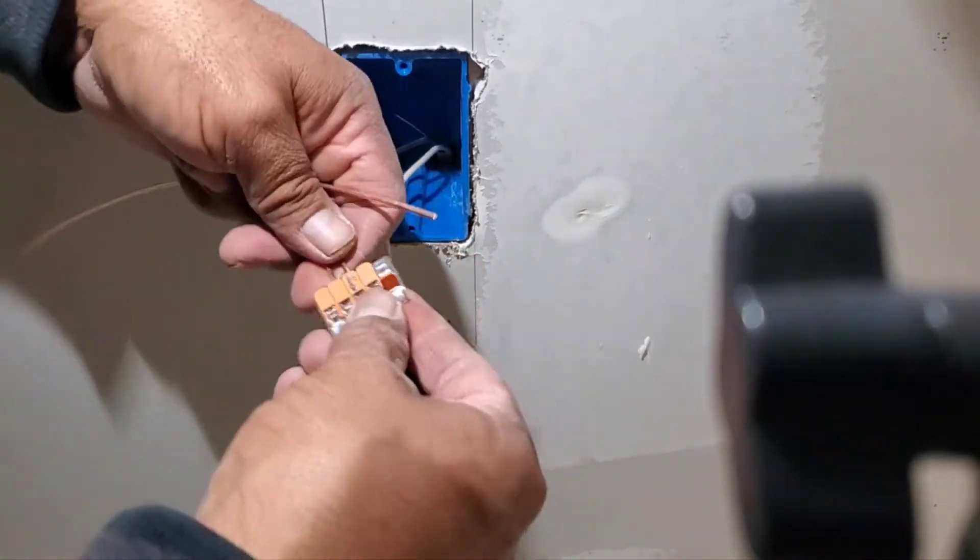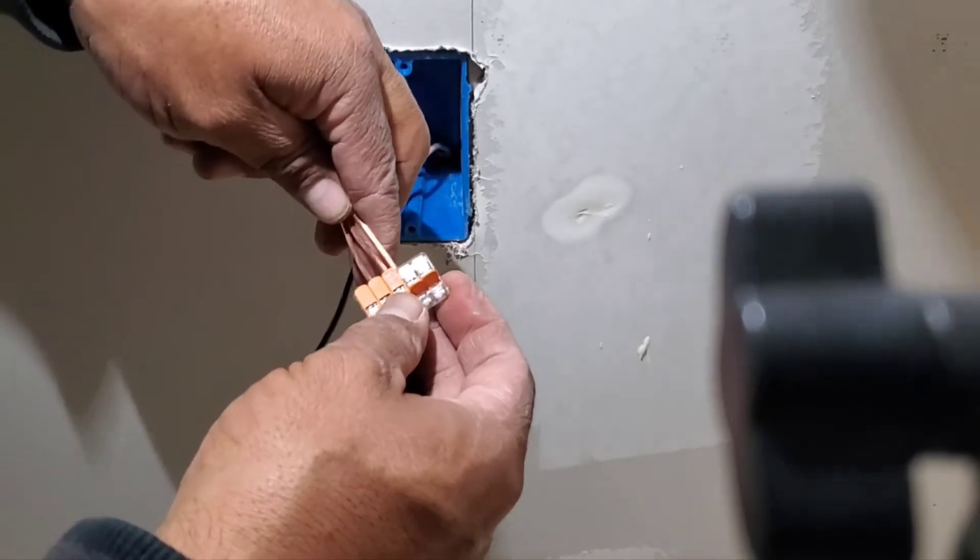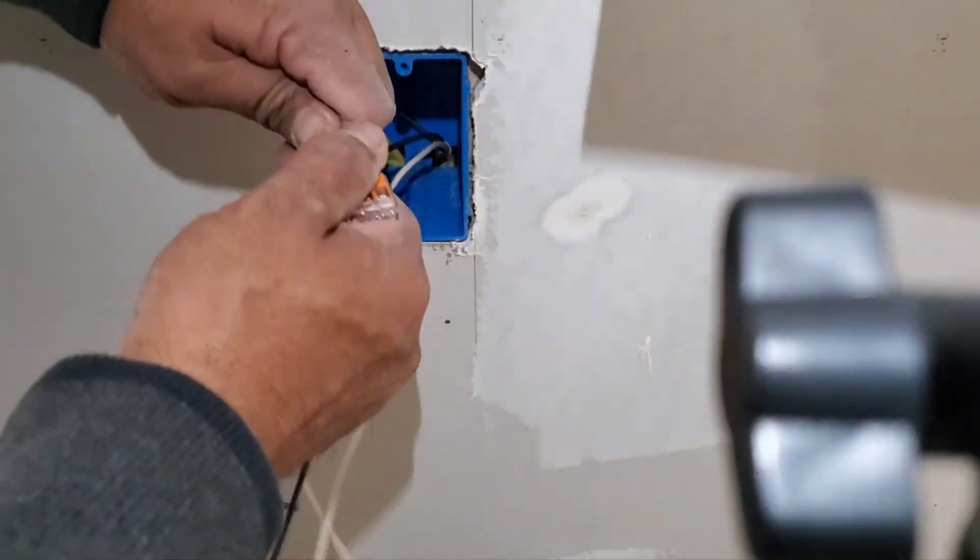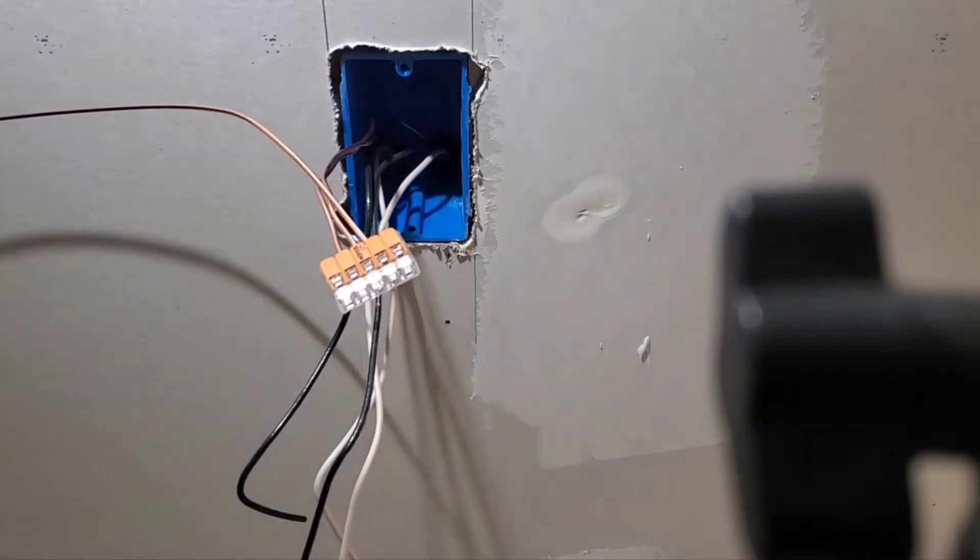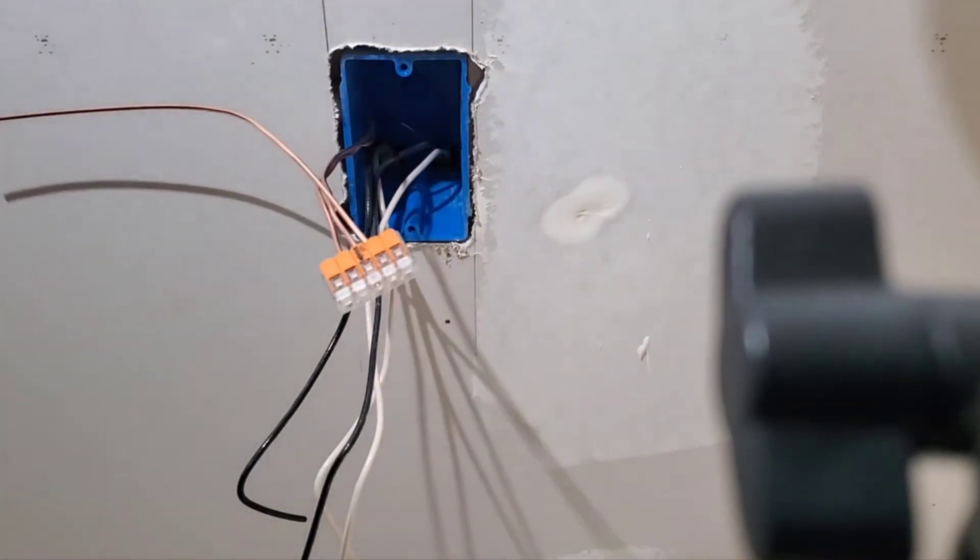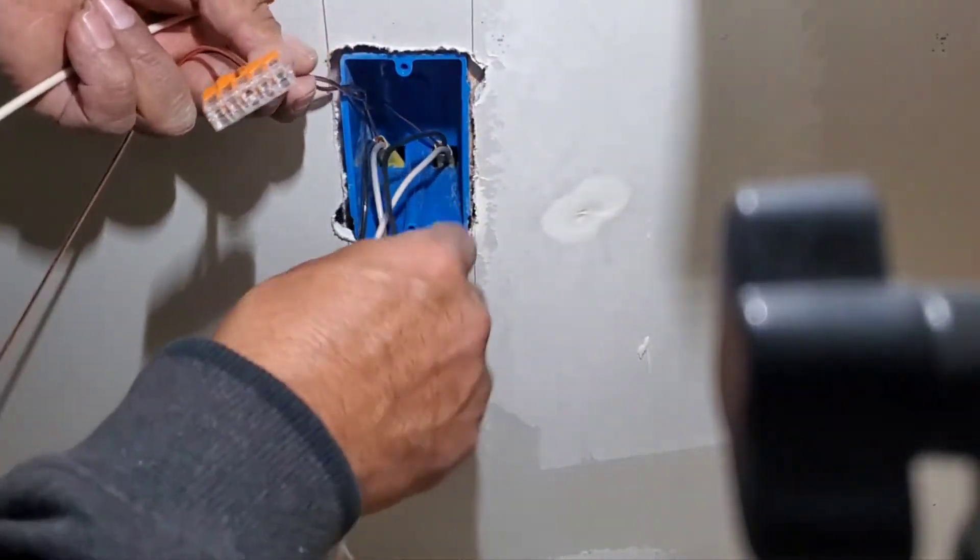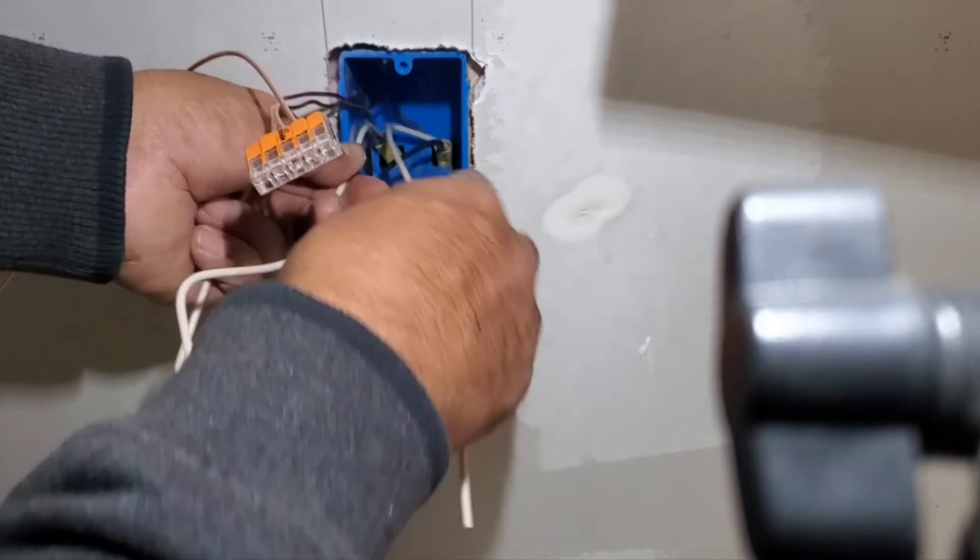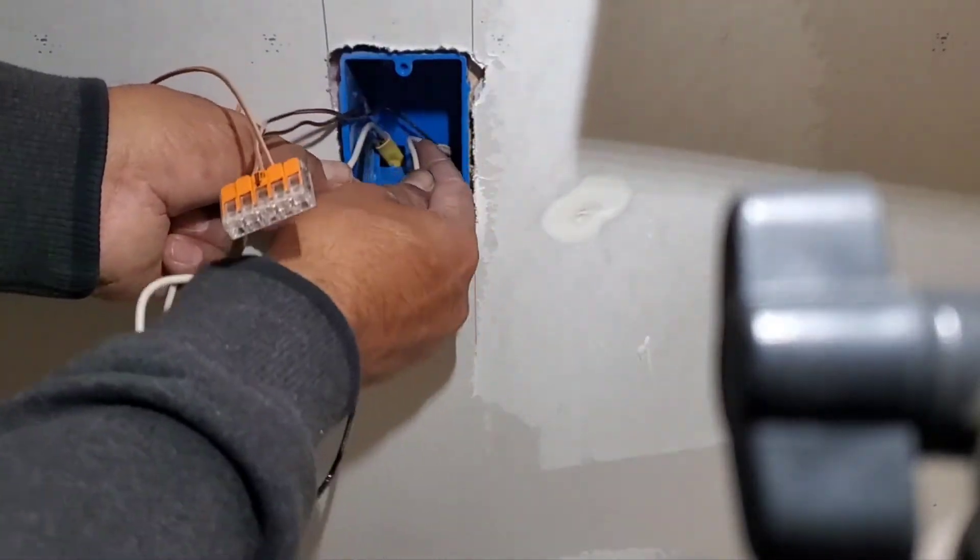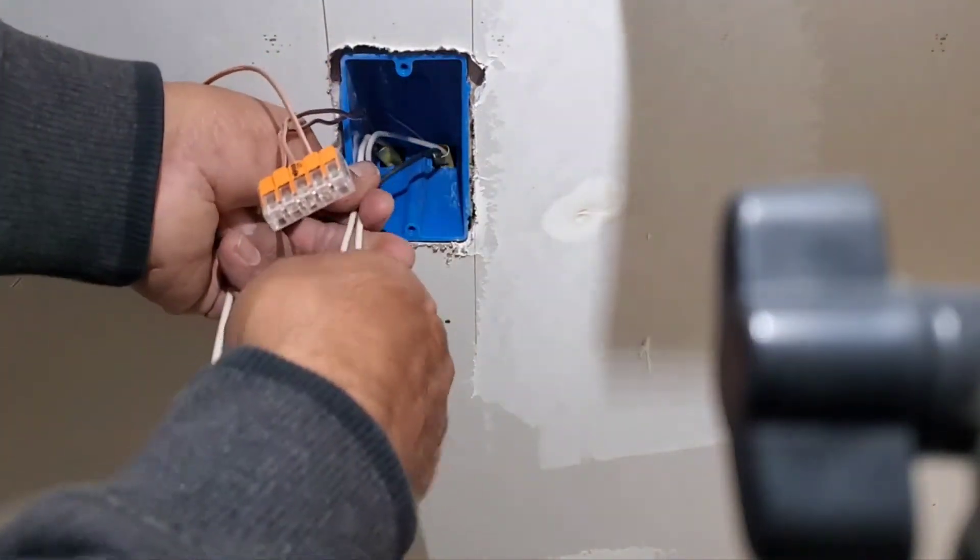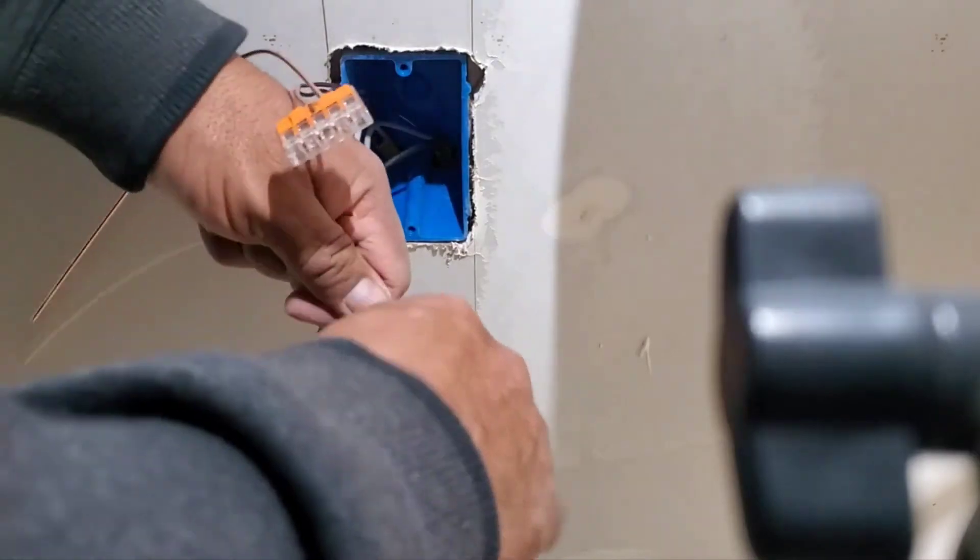So the last one is going to be these ones over here, the Wago connectors. So for these ones, we only have the five wire connectors, which is good. But when I went to Home Depot, they only have these ones. They don't have the one for three. So we're going to be using these ones.